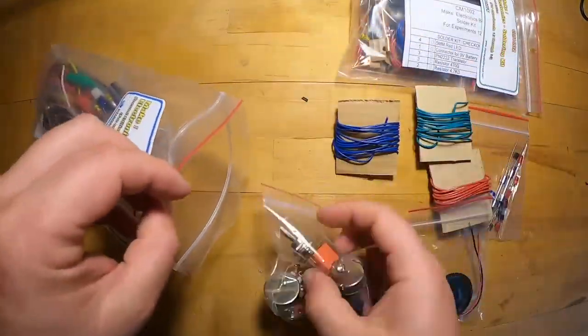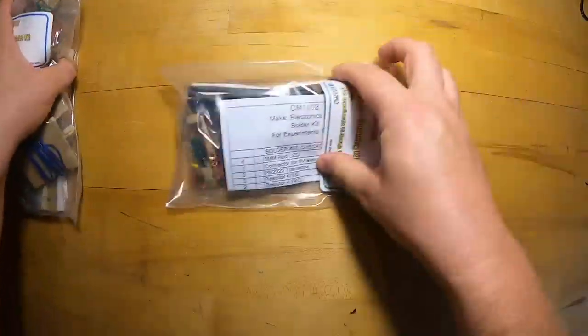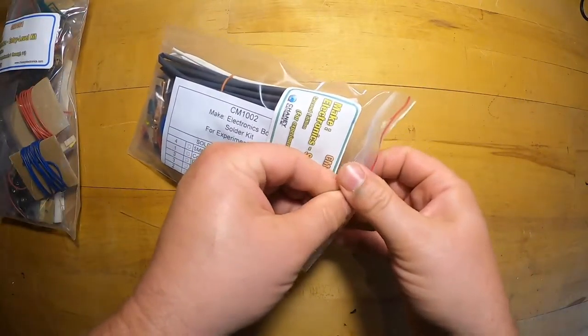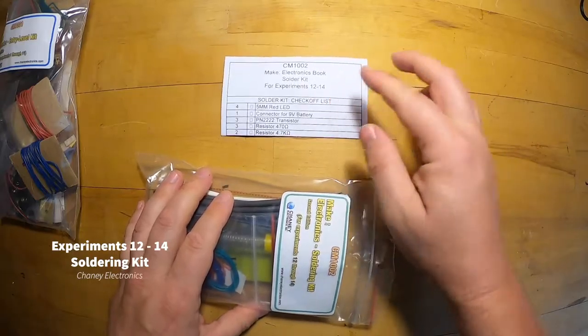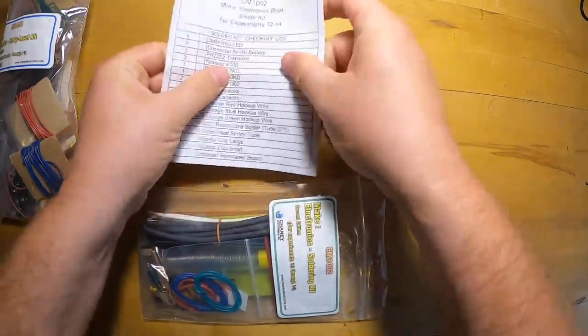We're going to show you how to test the individual passive components like the resistors, the capacitors, and so on, and move on to experiments 12 through 14, which is for doing experiments that you're going to solder together.